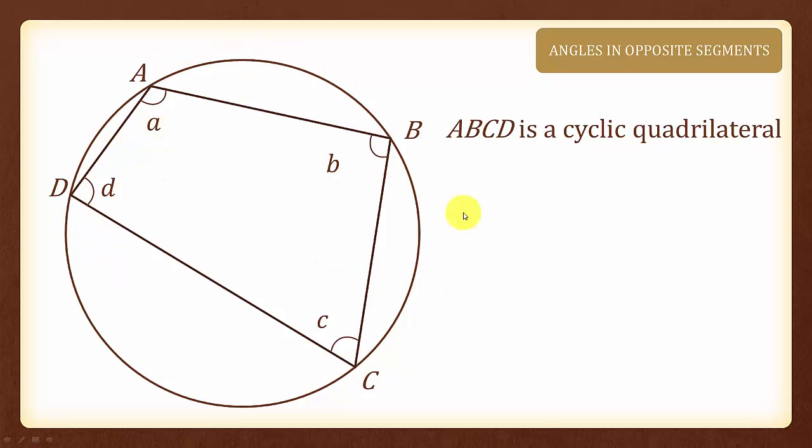Given a cyclic quadrilateral here, angle A plus angle C will be 180 degrees, while angle B plus angle D will also be 180 degrees. And we call this angle property angles in opposite segments.